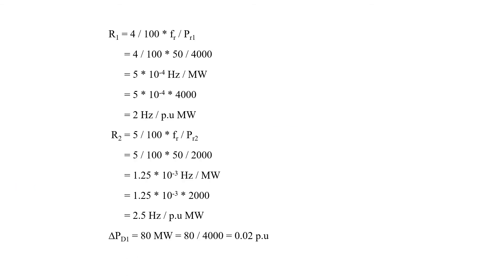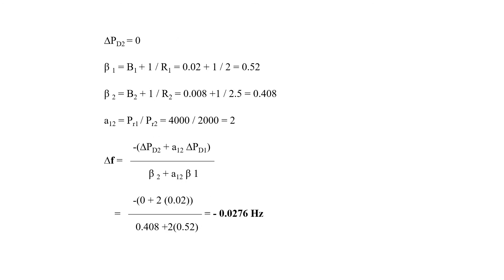Now calculating R1: speed regulation is 4%, so R1 = (4/100) × (FR/PR1) = (50/4000) × 4000 = 2 Hz per unit MW. Similarly for R2: speed regulation is 5%, so R2 = (5/100) × (50/2000) × 2000 = 2.5 Hz per unit MW. Delta PD1 = 80/4000 = 0.02 per unit MW for area 1. Delta PD2 = 0.